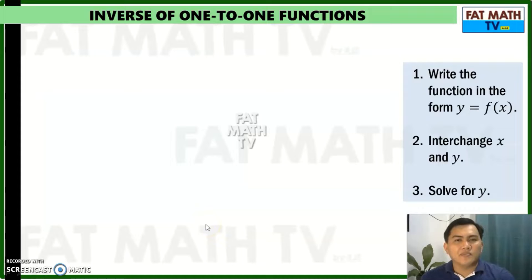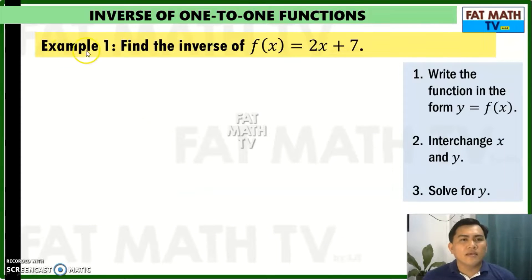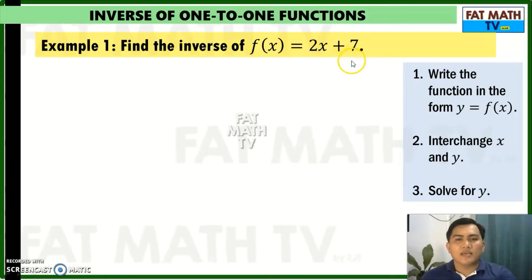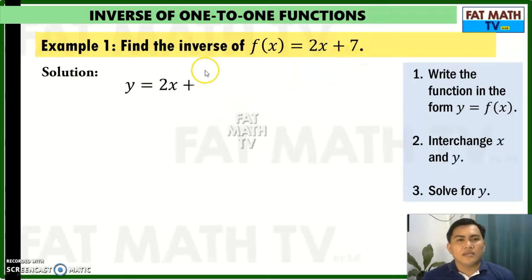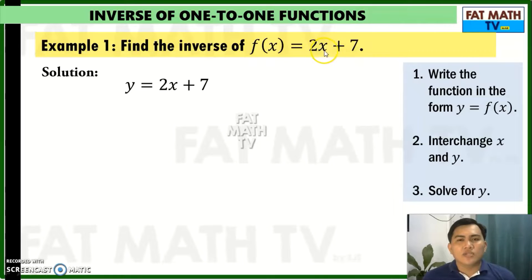Example: find the inverse of f of x equals 2x plus 7. So we have to write this as y equals f of x, so y equals 2x plus 7.